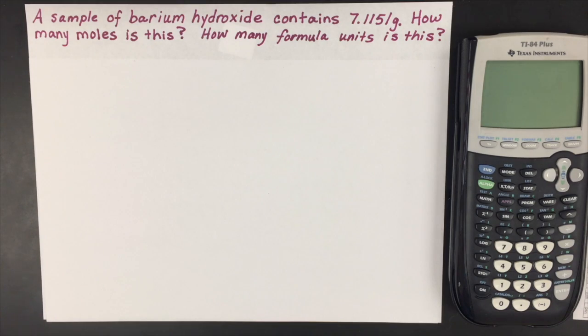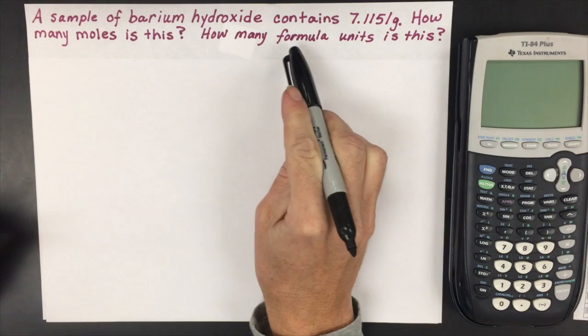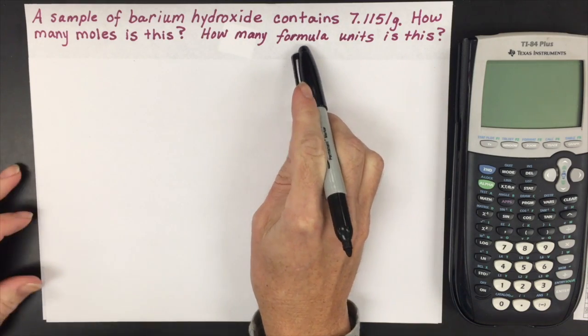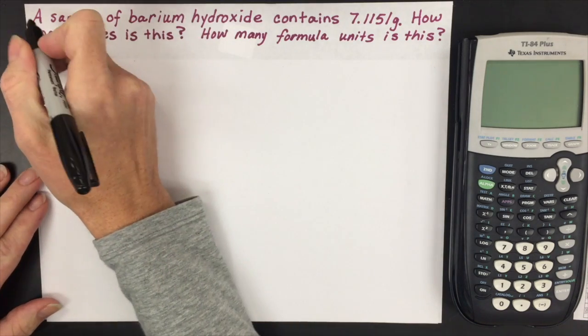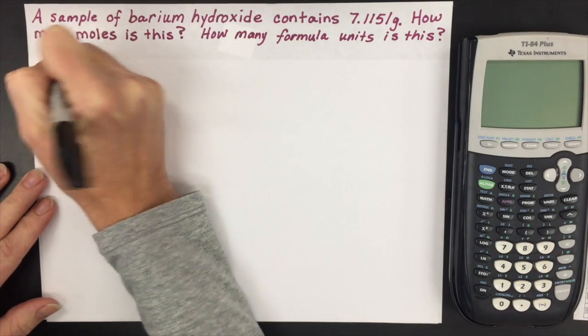We're going to convert a mass of barium hydroxide into moles and also to formula units. To do this problem correctly, you have to write the ionic compound barium hydroxide correctly.